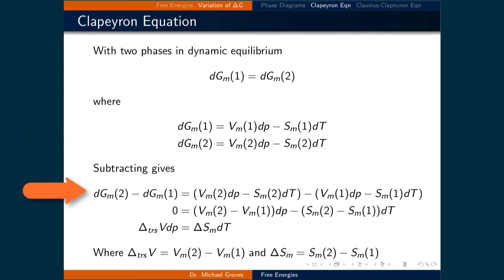When we subtract these two equations, we can group together terms and distribute out the dp and the dT. We can also set this subtraction equal to zero, since both values for the infinitesimal change in molar Gibbs free energy are the same. Thus, zero is equal to the molar volume of the second phase minus the molar volume of the first phase, all times dp, minus the molar entropy of the second phase minus the molar entropy of the first phase, all times dT.